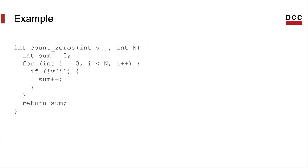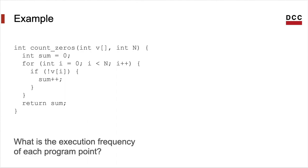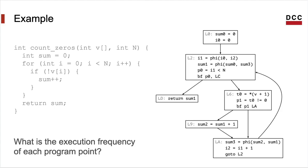To illustrate what our paper does, I shall use this program. It counts the number of zeros in an array, but its semantics is not very important to this presentation. We are interested in answering this question: what is the execution frequency of each point of the program? Or, in other words, how often was each edge of the program's control flow graph traversed during its execution?